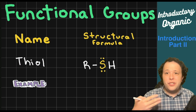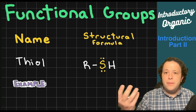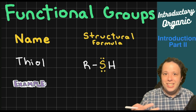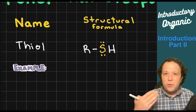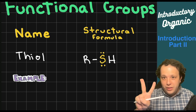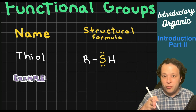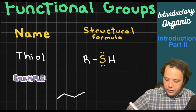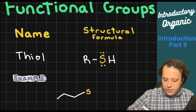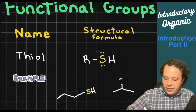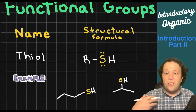Thiols are more prominent in biochemistry but do appear in organic chemistry. They're responsible for very pungent aromas. Thiols are the type of molecule with a sulfur atom — sulfur bonds to two things just like oxygen, being in the same group directly below it. You'll typically see a sulfur attached to the side of a chain, not necessarily only at the first position but also at the second.